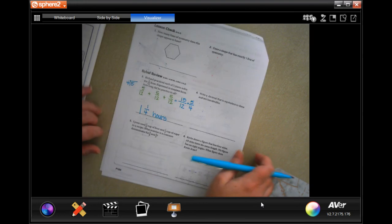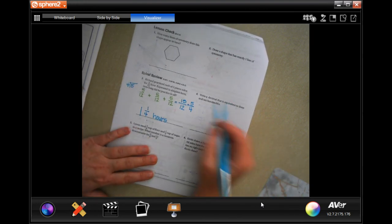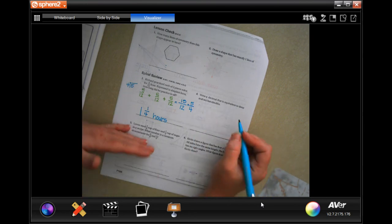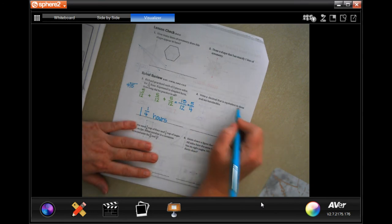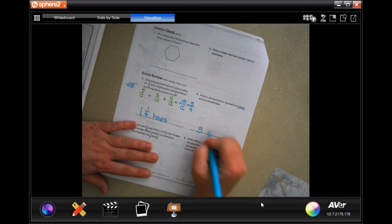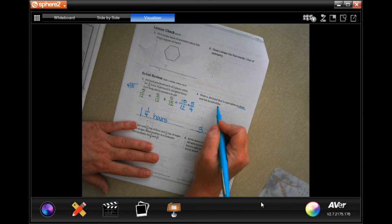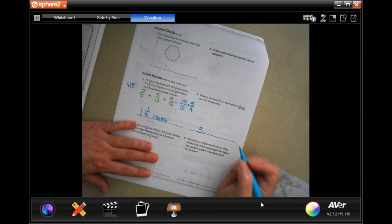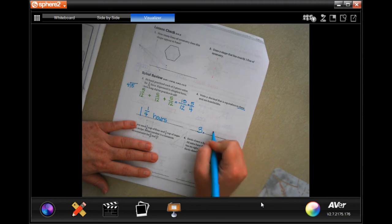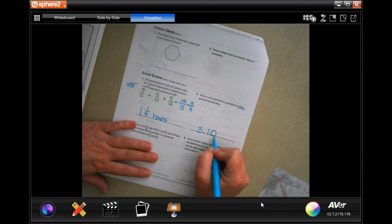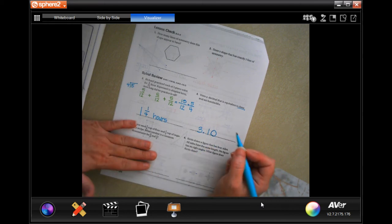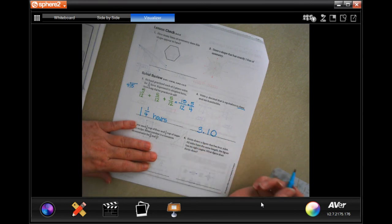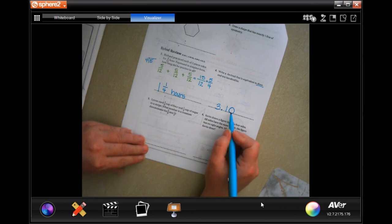Write a decimal that is equivalent to three and ten hundredths. Well, three is my whole number and I need ten with my last number ending in the hundredth spot, so that's the second spot. Now if I've got a one there, then that's one hundredth. So if I were to do this, then I have three with ten and it ended in the hundredth spot. That's all I got to do. You could have 3.1, that's fine, but ending in the hundredth spot, put that zero in.